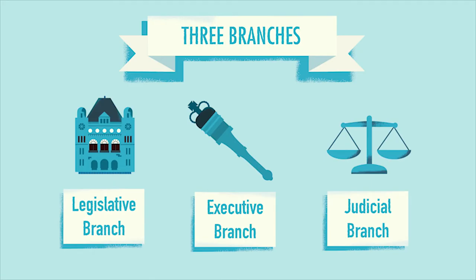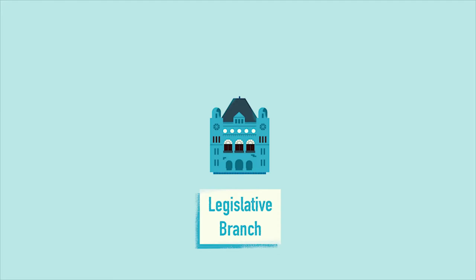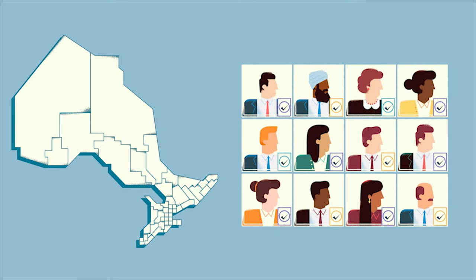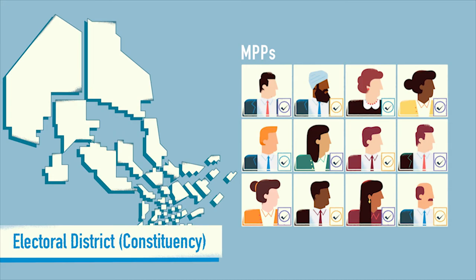Let's take a closer look at how it works at the provincial level in Ontario. First, there is the legislative branch, composed of all elected representatives. In Ontario, these elected individuals are called members of provincial parliament, or MPPs for short. Each MPP represents a different geographic area within Ontario, called an electoral district or constituency, and most are associated with a political party.